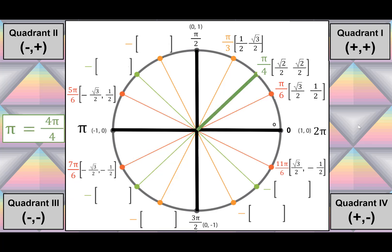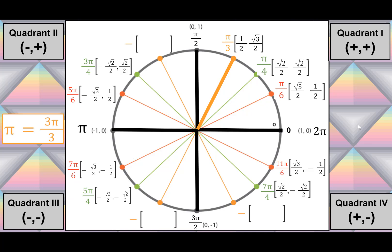For π/4, adding π gives 5π/4, which has a negative x and negative y. π/4 less than π gives 3π/4, and the corresponding fourth-quadrant angle is 7π/4. For π/3, adding π gives 4π/3, which is negative in quadrant 3. One π/3 less than π gives 2π/3, and one π more than 2π/3 gives 5π/3.